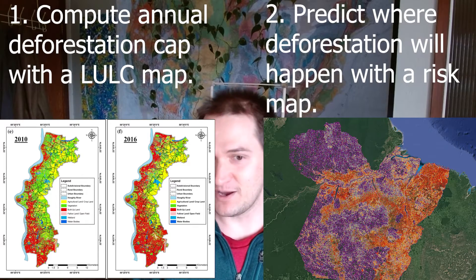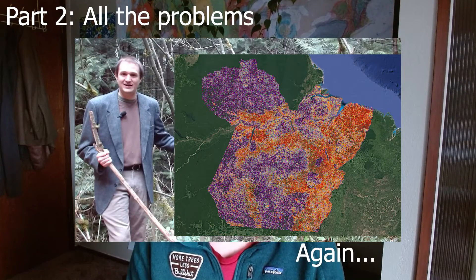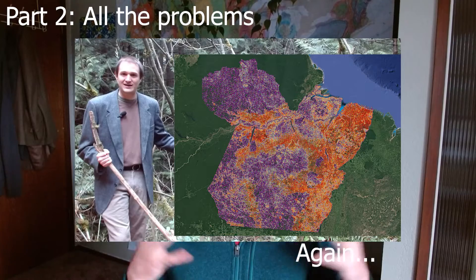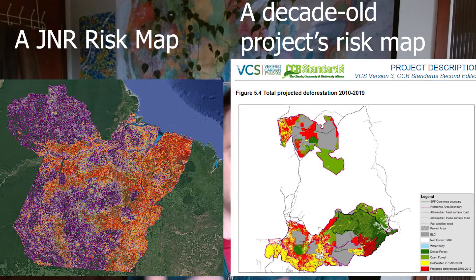Now I want to talk about why I think there are a lot of problems with this approach. One of the first things is that this is not a fundamental shift in thinking. This is still a set of alternative scenarios that people are coming up with to say what deforestation was going to happen inside of a project. You're still just creating a map of where deforestation was going to take place over the next six years — that's all it is.